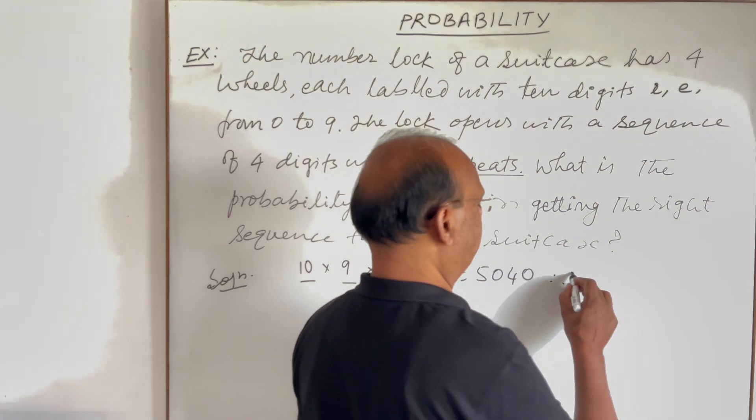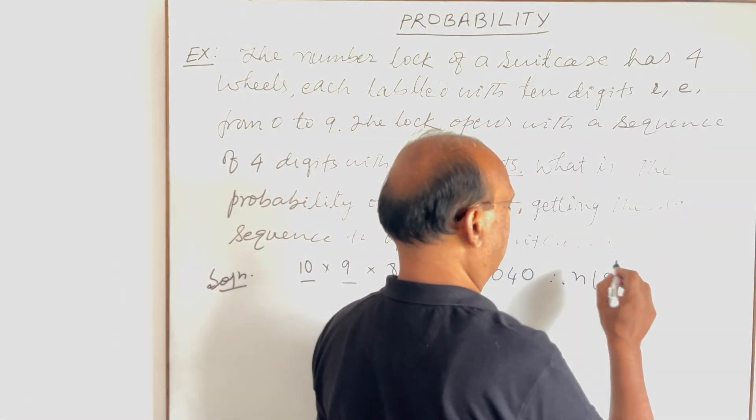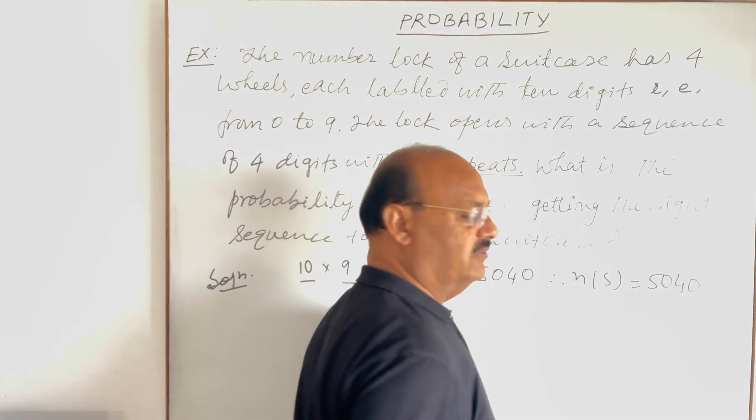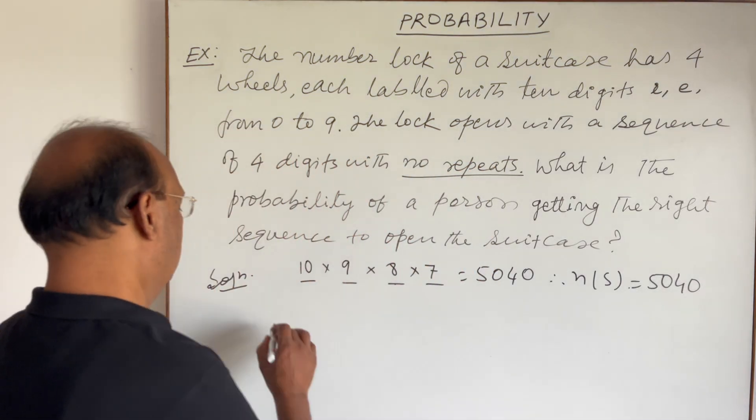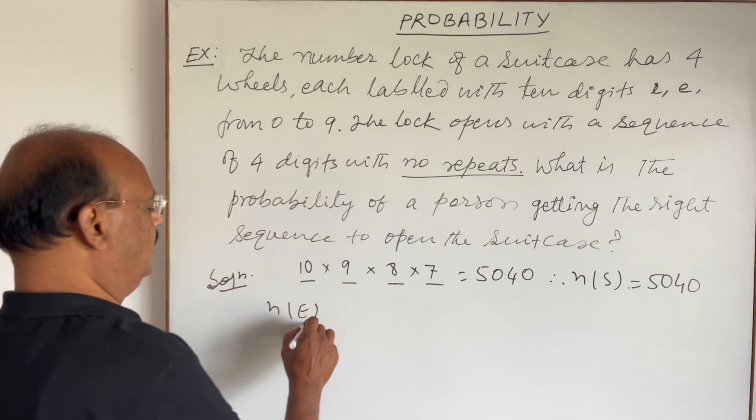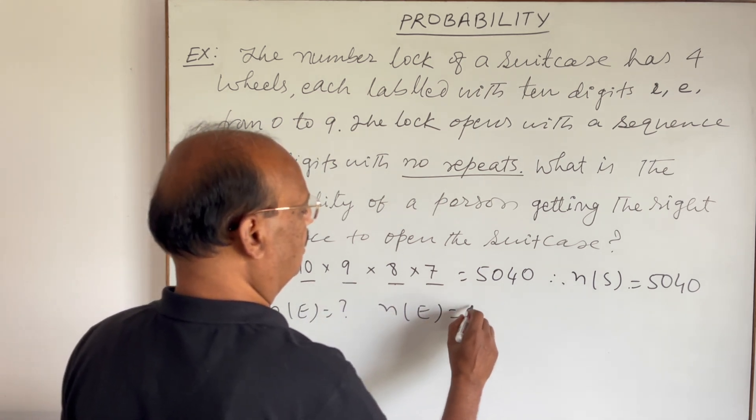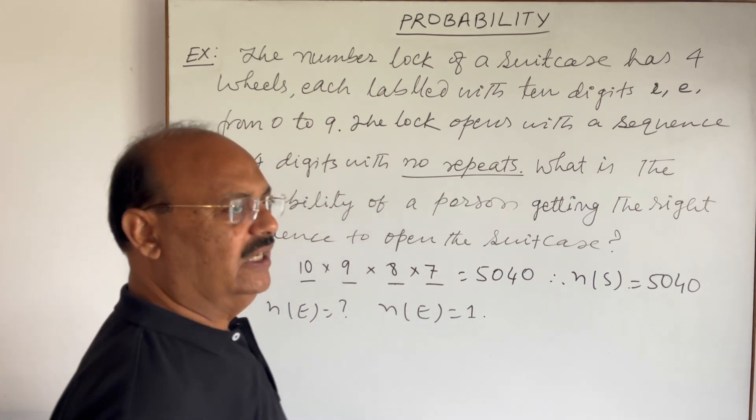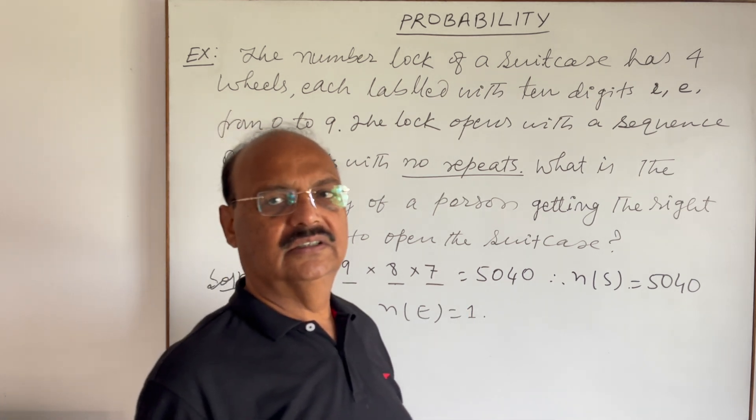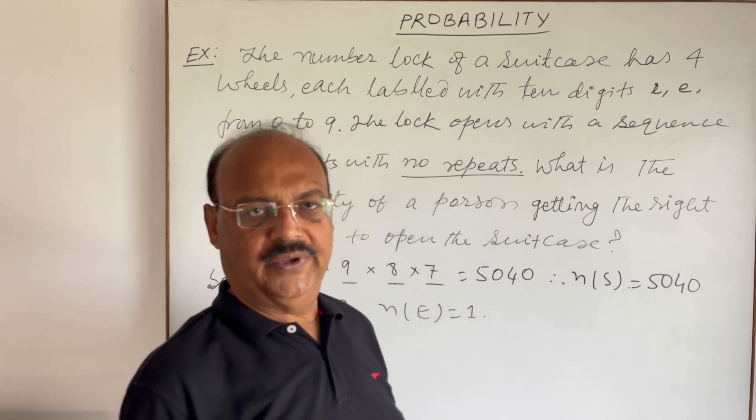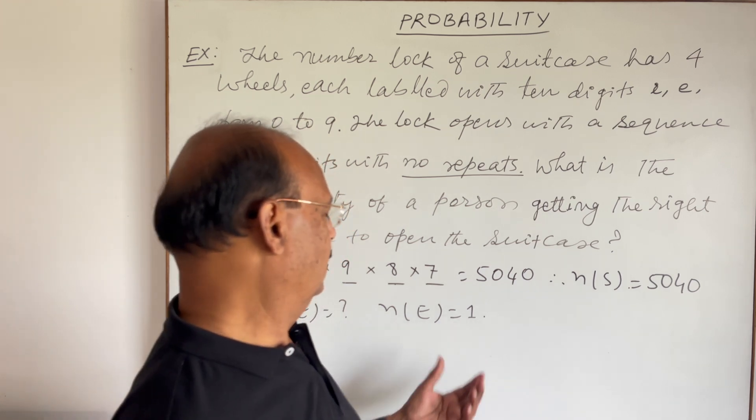we will get here 5040. And this gives the value of n(S), 5040. This is the value of n(S). And what will be the value of n(E)? n(E) will be 1, since there is only one sequence which is perfect and the suitcase will open. So n(E) is equal to 1.